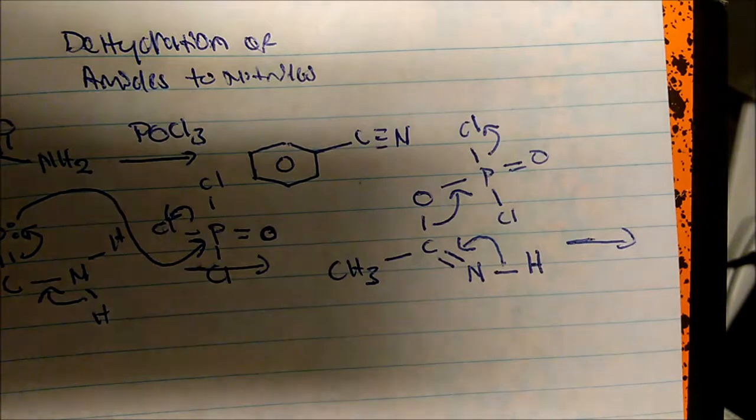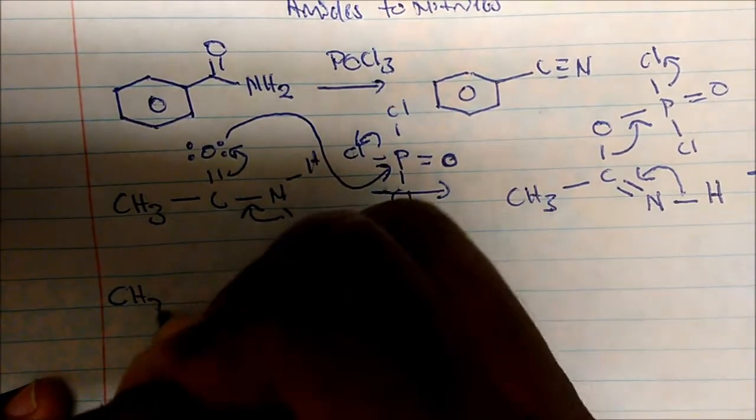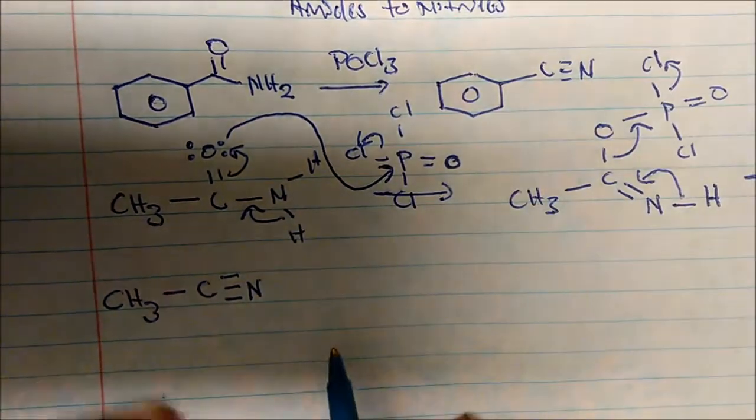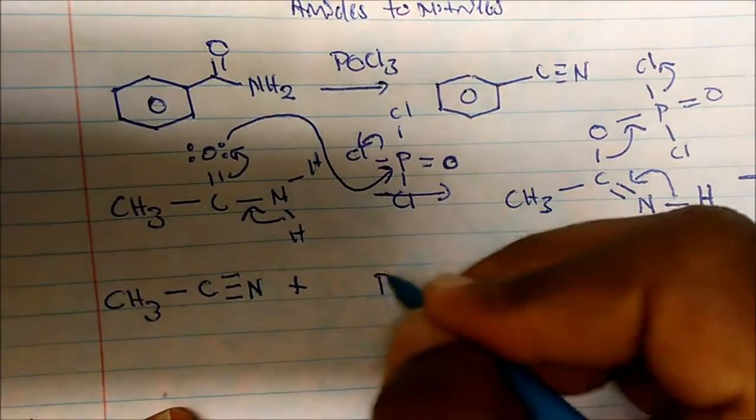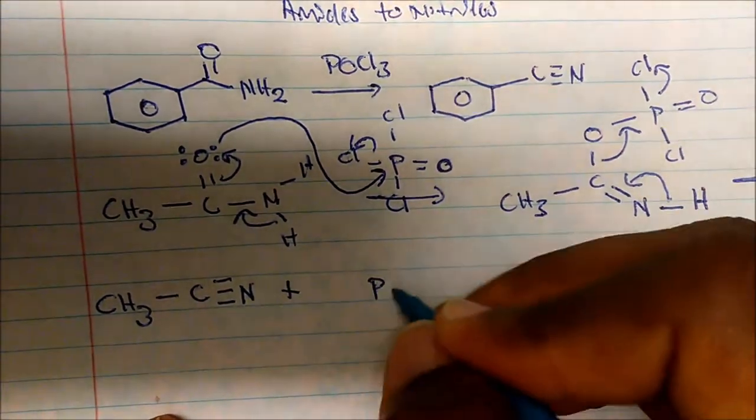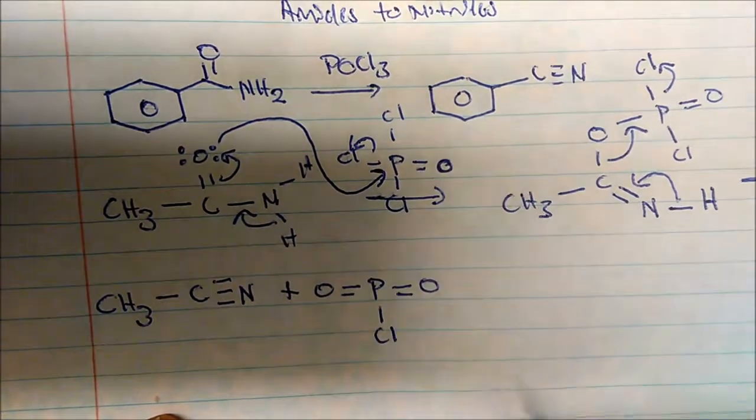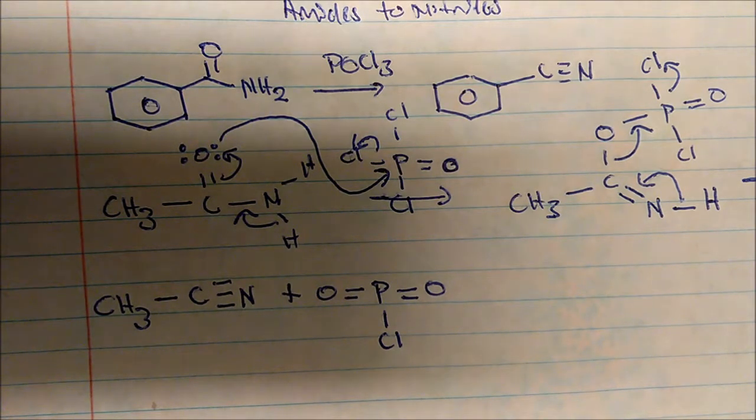So I want you to see the bond breaking procedure here. And so with that being said, we now form CH3 that is bonded to a carbon that now has a triple bond. And we also form a phosphorus that now has two double bonds to an oxygen and one chlorine since the other left.